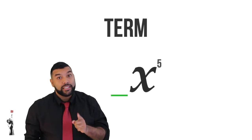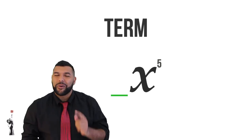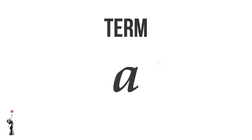But there is a number — it's just invisible. What it means is that there's a 1. Similarly, if we just have the variable A, it doesn't mean that there's no power on it — it means that the exponent is 1.